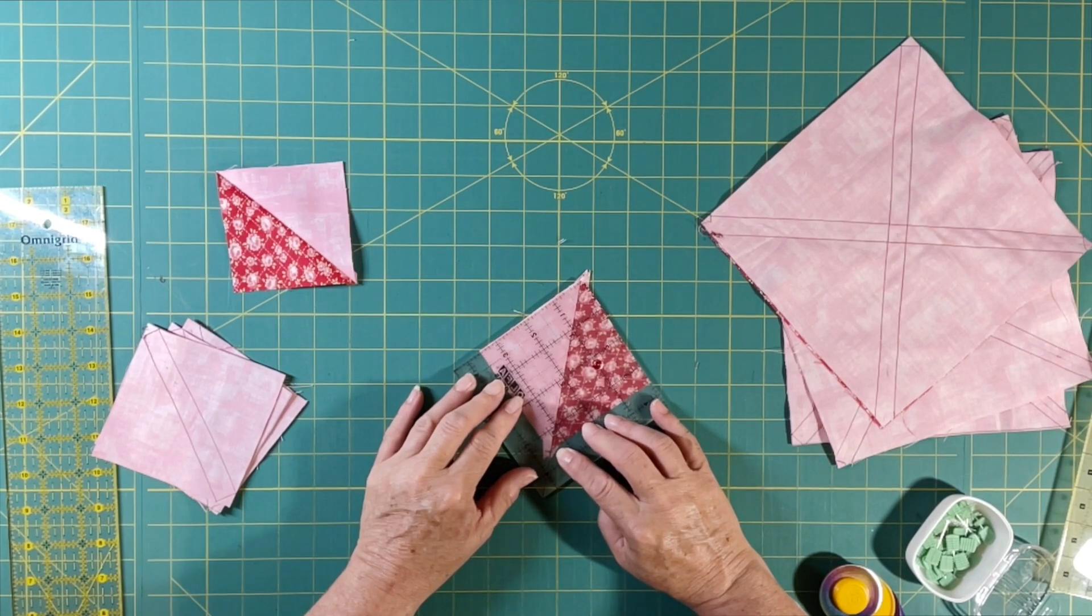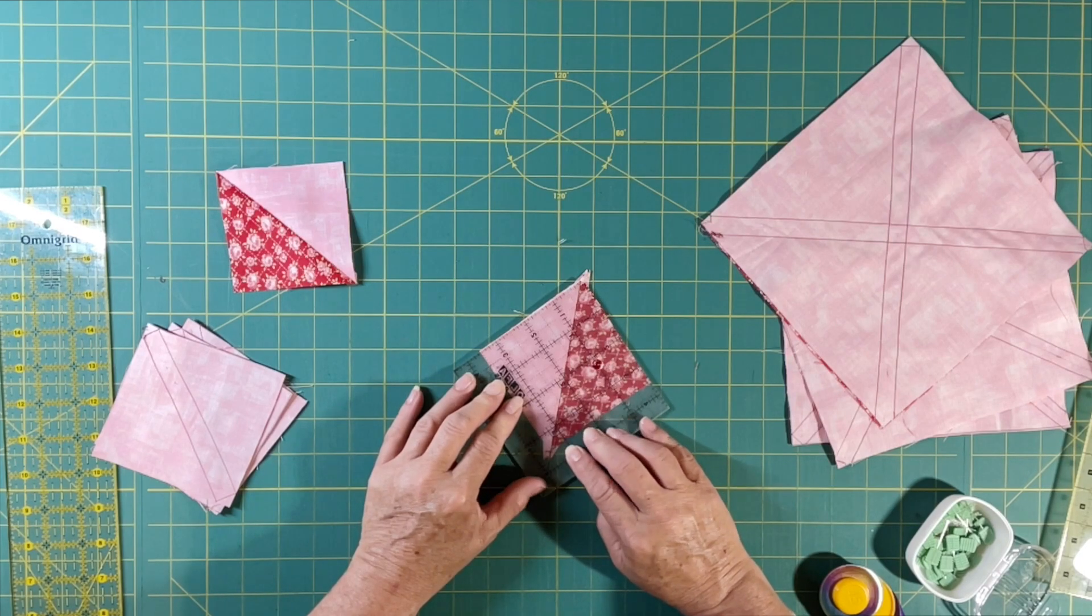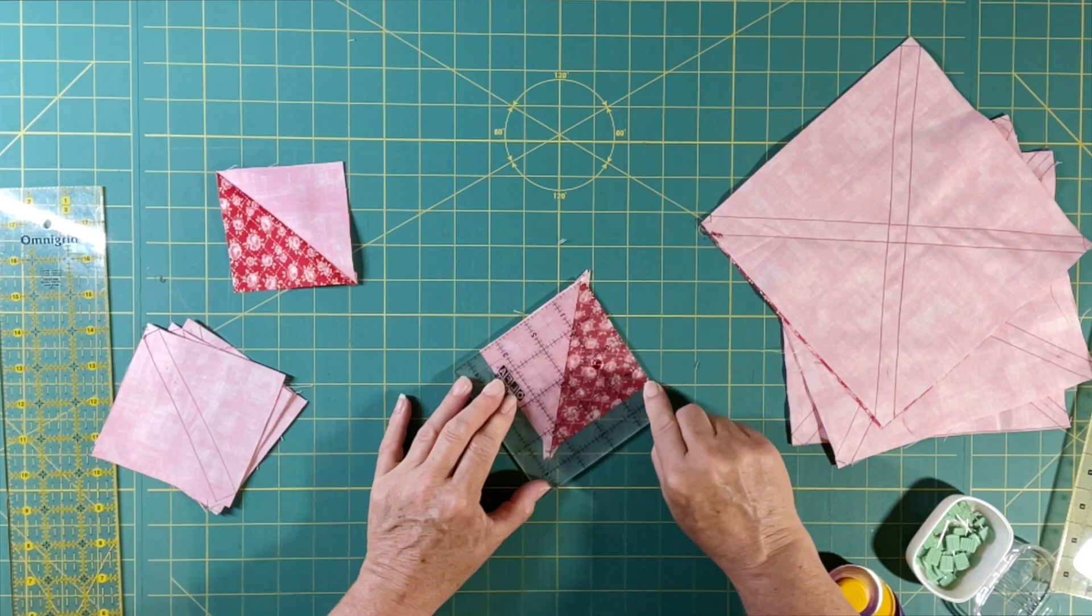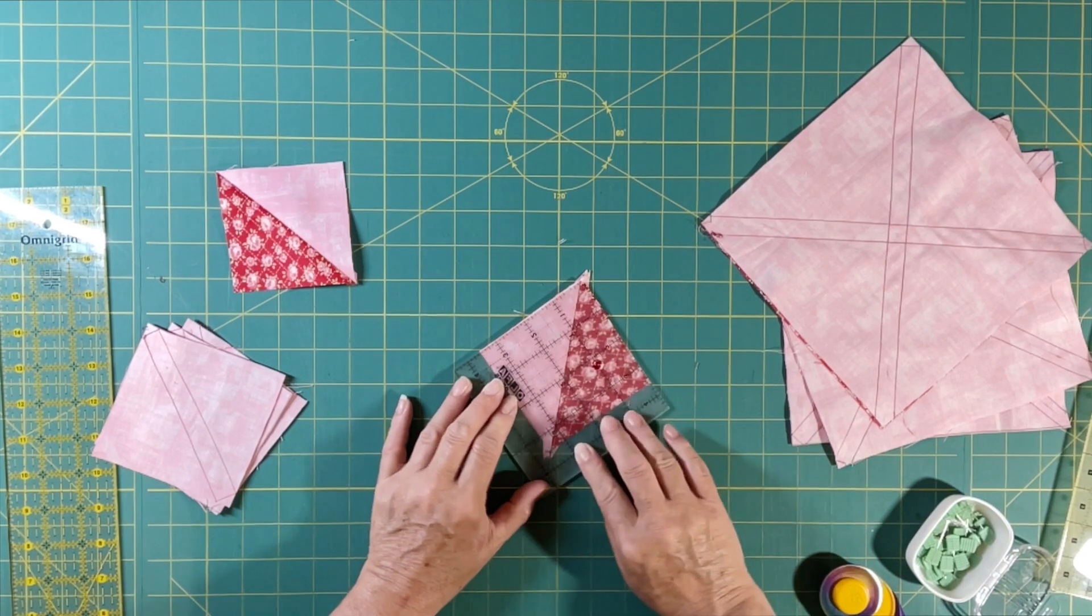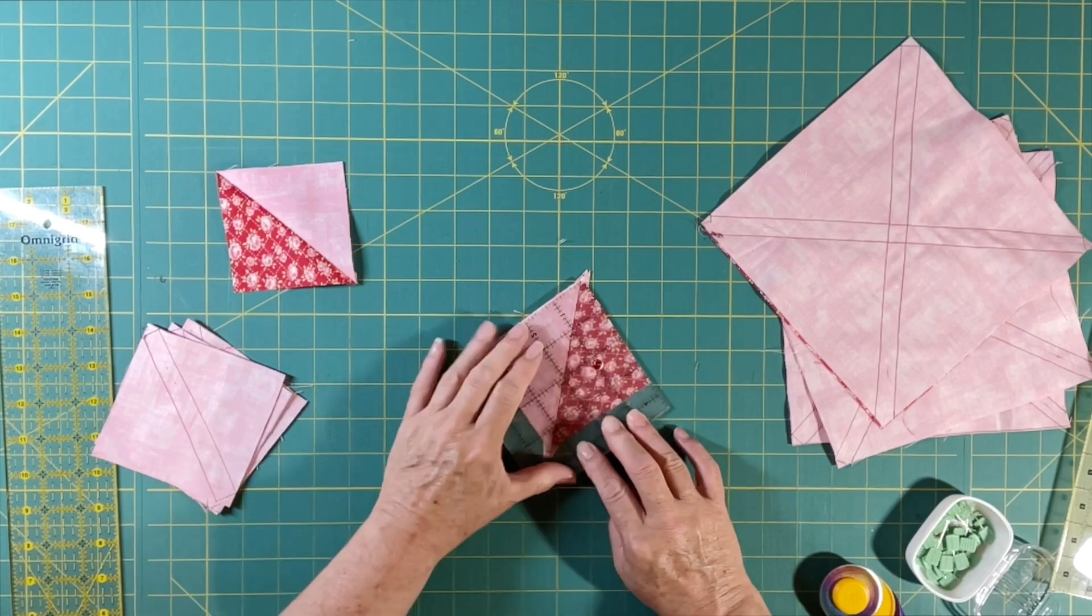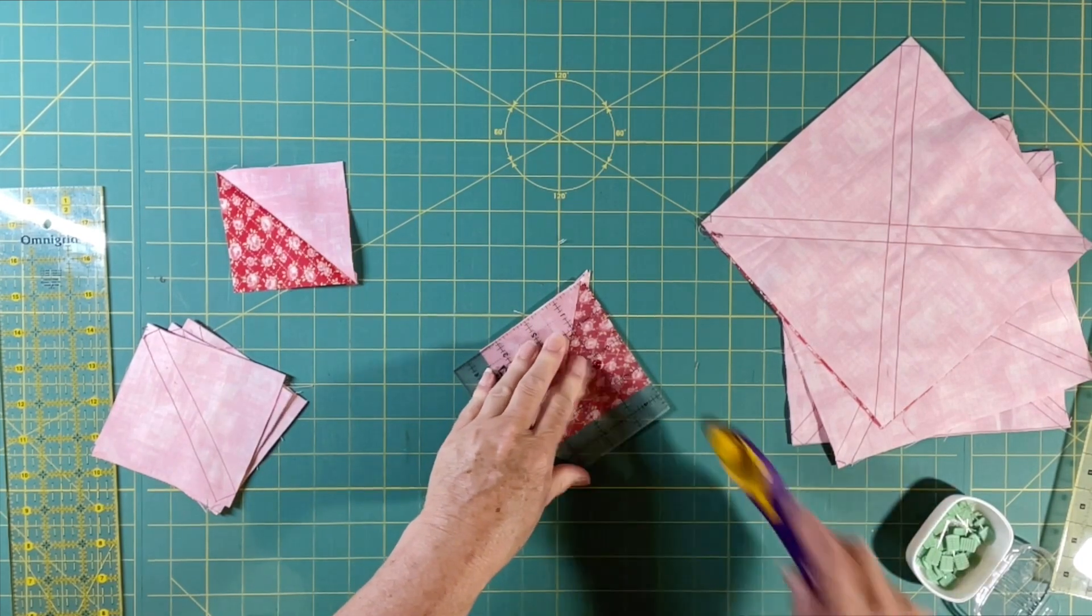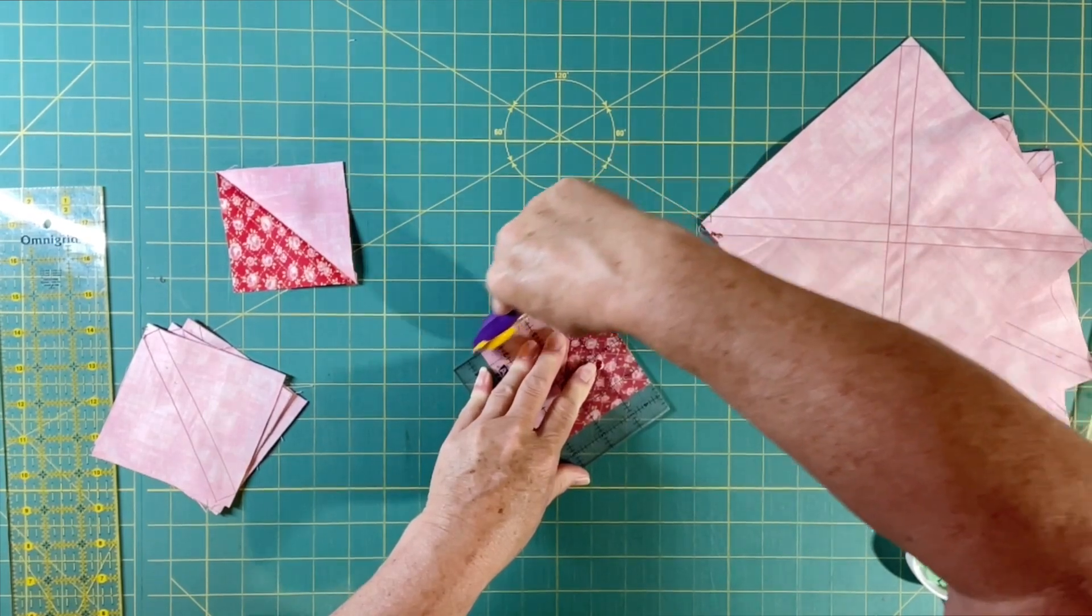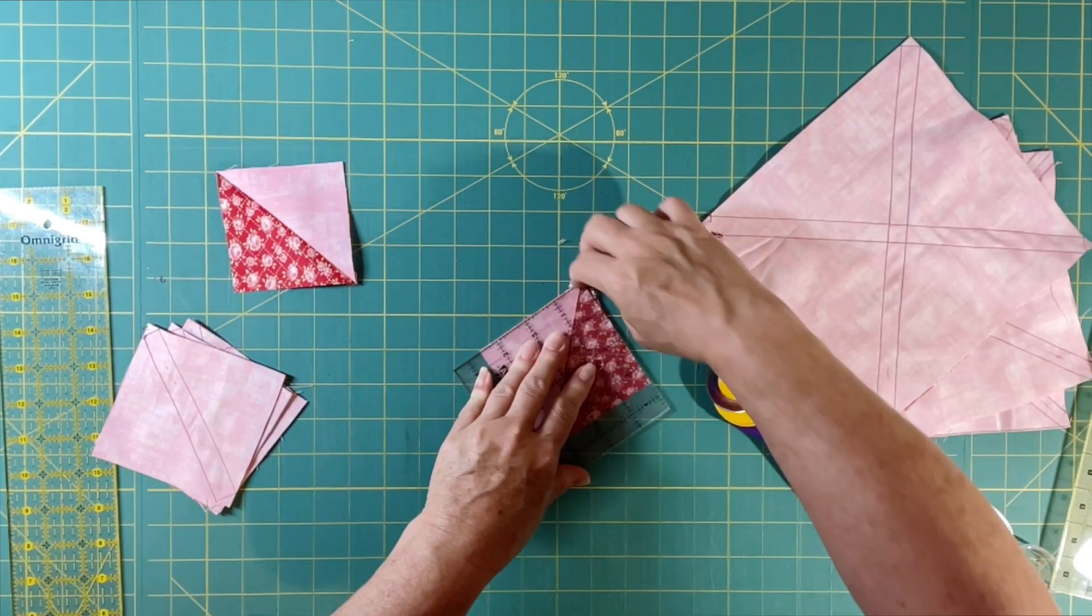So you get that in the center and you make sure at your three and a half you still have some sticking out on the edges. Okay, so you can cut two sides, trim your two sides and you may not have much.